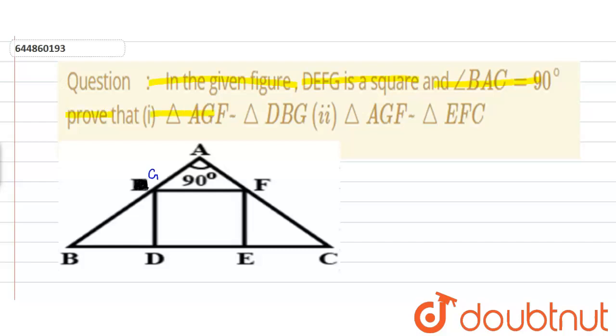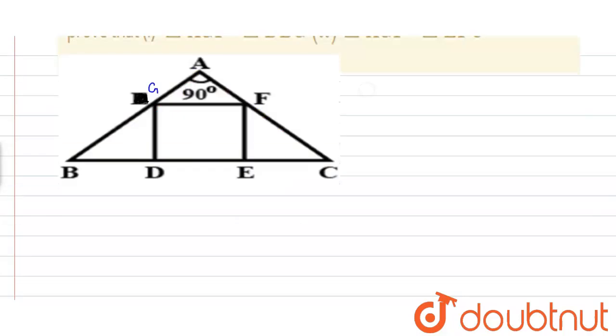Prove that triangle AGF is similar to triangle DBG and triangle AGF is similar to triangle EFC.